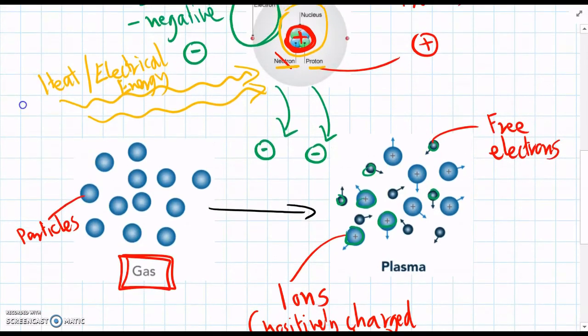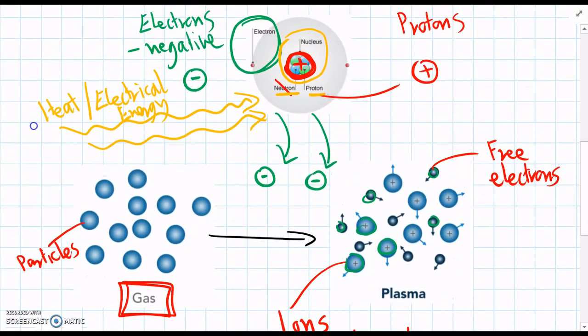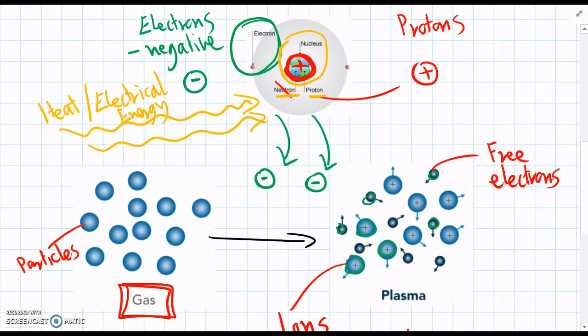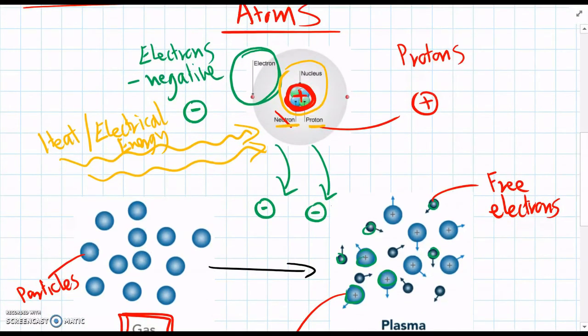So overall, plasma, we can think of as similar to a gas, but it's made up of ions and electrons.